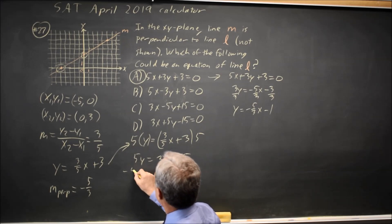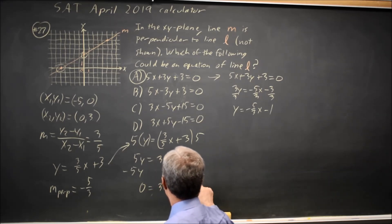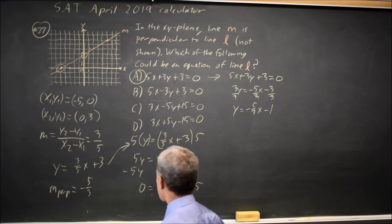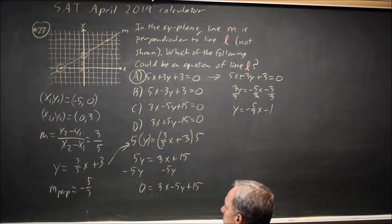If I subtract 3x from both sides. Actually, let's subtract the 5y. I get 0 equals 3x minus 5y plus 15. And this is standard form. Ax plus By plus C equals 0.